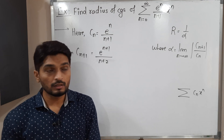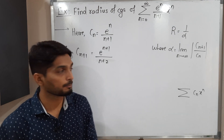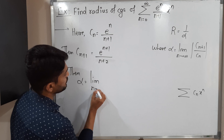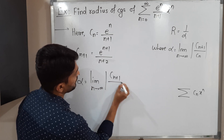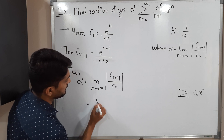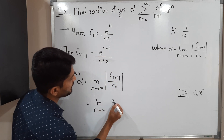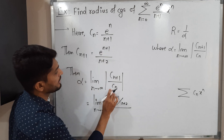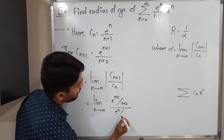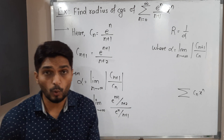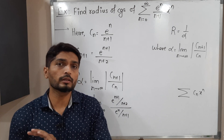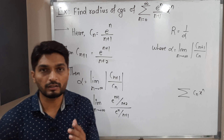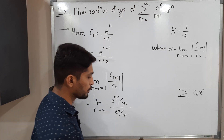Now both C_n and C_{n+1} are ready, so we can apply the formula to find alpha. Alpha equals the limit as n tends to infinity of |C_{n+1} / C_n|. Substituting: C_{n+1} = e^(n+1)/(n+2) and C_n = e^n/(n+1). There is no need to apply the absolute value since n, n+1, n+2 are all positive natural numbers, and e^(n+1) and e^n are definitely positive.